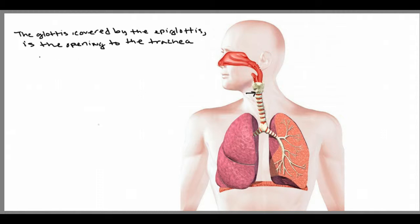The bronchial tubes, which branch out into the lungs, are lined by cilia. Cilia are like tiny little hairs, which increase the surface area and also move substances and debris along.